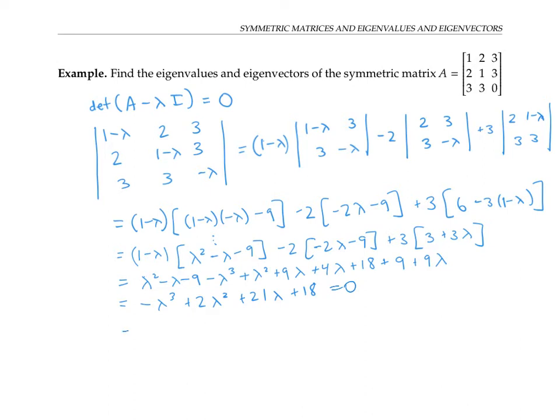It turns out this factors into the following expression. I figured this out using Wolfram Alpha, and you're welcome to too. You can also figure it out by hand, knowing that the possible candidates for these roots, these solutions for lambda, are going to be plus or minus the factors of 18, and then using long division. In any case, we now know what our eigenvalues are.